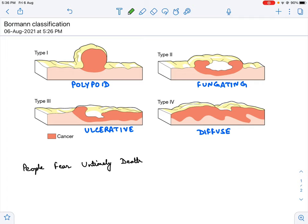When an endoscopist performs an endoscopy and encounters a lesion which looks like gastric cancer, there is a classification for what the endoscopist sees.